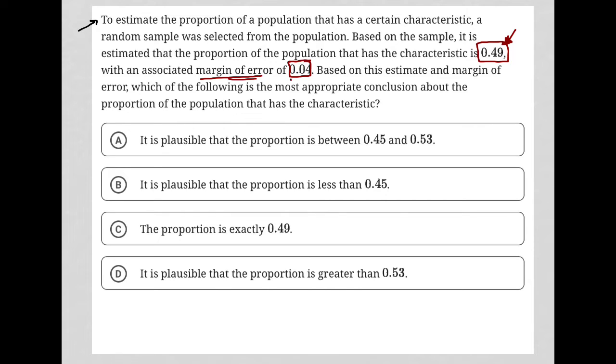Basically, having a margin of error of 0.04 simply means that this 0.49 that's been listed could actually be 0.04 higher or it could be 0.04 lower and therefore it exists within that range. So 0.04 lower than 0.49 would be 0.45. And then on the high end, 0.49 plus 0.04 would be 0.53.